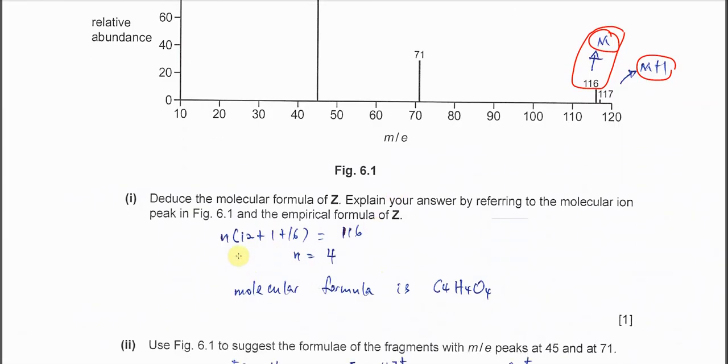We already have the empirical formula. We need to get the multiplier. Use N times CHO. Then 116 over this value gives N equals 4. So the molecular formula is C4H4O4.